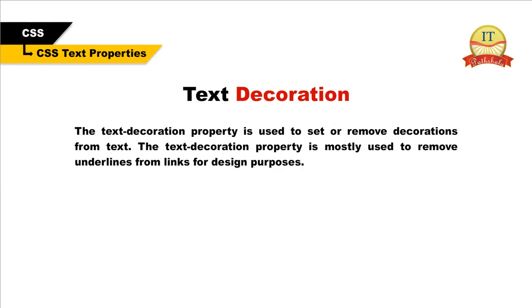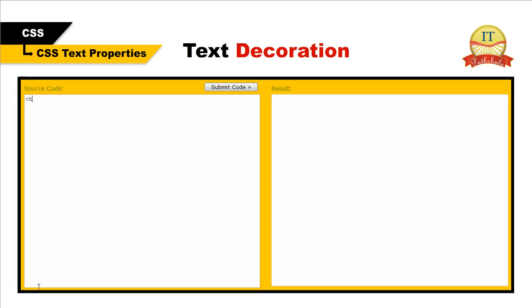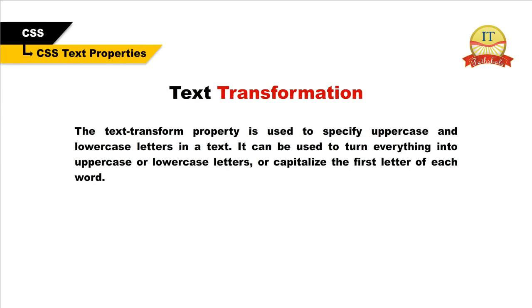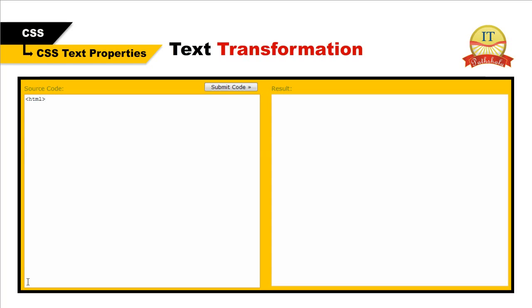Text decoration — the text-decoration property is used to set or remove decorations from text. It is mostly used to remove underlines from links for design purposes. Text transformation — the text-transform property is used to specify uppercase and lowercase letters in a text. It can be used to turn everything into uppercase or lowercase letters, or capitalize the first letter of each word.